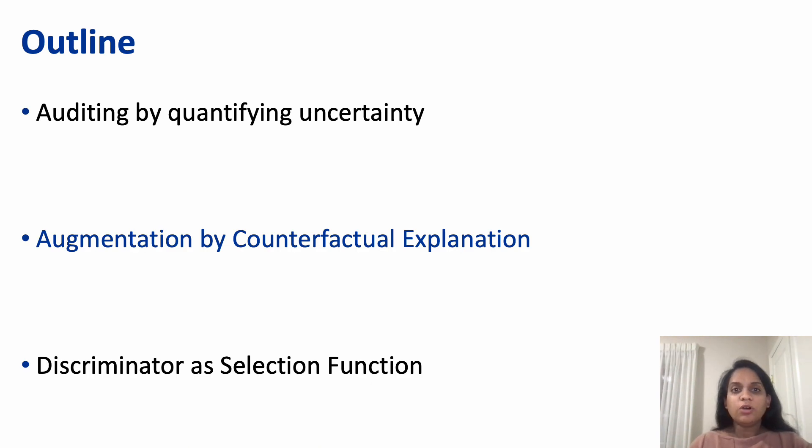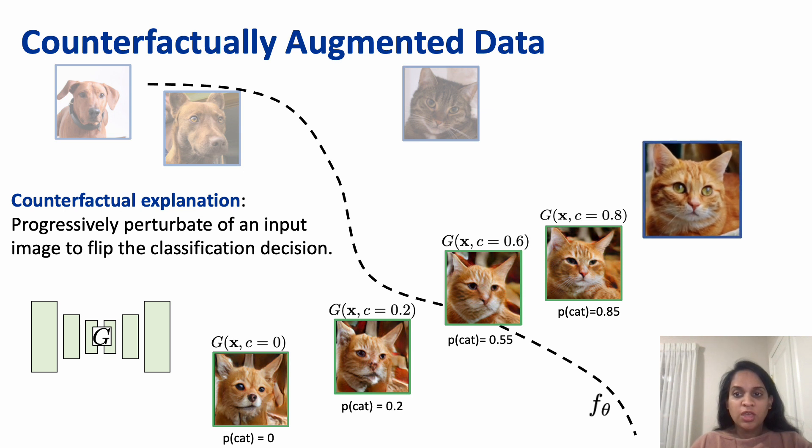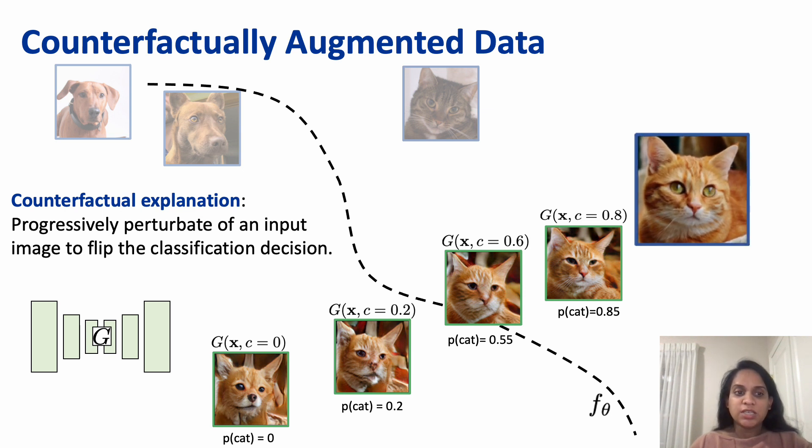To fix such overconfident classifiers, we propose fine-tuning with counterfactual explanations. In our work, we generate counterfactual explanations using a conditional GAN. It progressively creates realistic perturbations of input images that flip the classification decision.